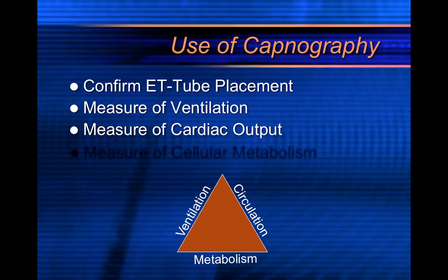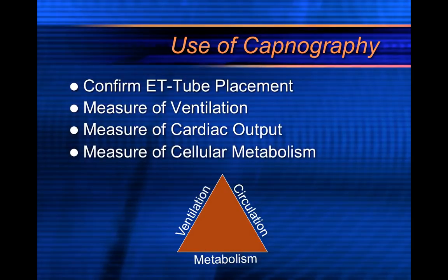Capnography is also a measure of cardiac output. It will measure cardiac output somewhat — it's not a blood pressure, but it can tell you if somebody's perfusing, and lower values certainly indicate lower levels of perfusion. The values can tell you about ventilation, cardiac output, and cellular metabolism. If somebody's breathing really fast, that might explain a lower end tidal CO2 value. However, if somebody has a normal respiratory rate and a low end tidal CO2 value, maybe they're in shock — because there are conditions such as shock that can give you a low end tidal CO2 value.